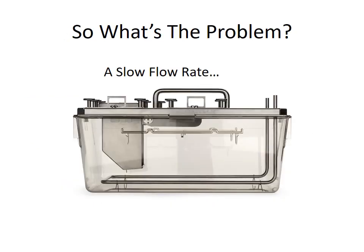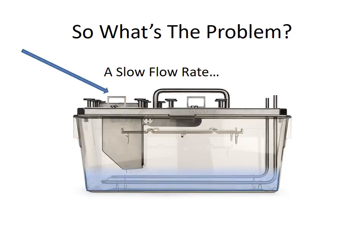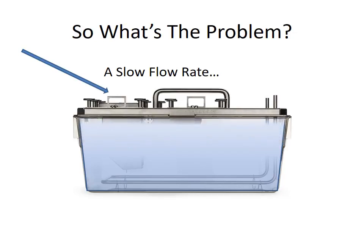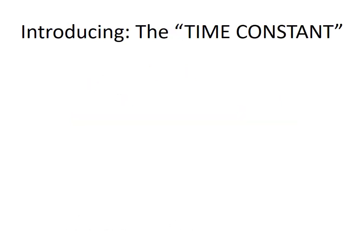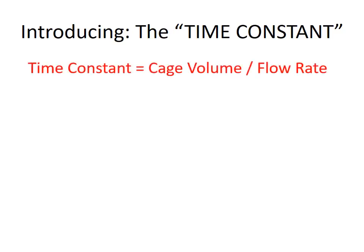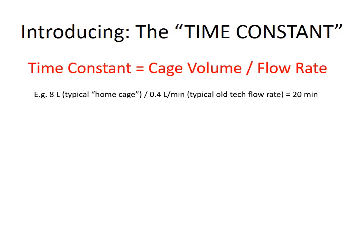So what effect does this have? There's a problem that the slow flow rate causes: it will fill the cage very, very slowly. As a consequence, we have to deal with something called the time constant of the cage. The time constant is the volume of the cage divided by the rate of flow being pushed or pulled through the cage. A typical example: about 8 liters STP is the internal volume of a typical home cage for mice. At 0.4 liters per minute — a typical legacy flow rate — that gives you a time constant of 8 over 0.4, or 20 minutes.